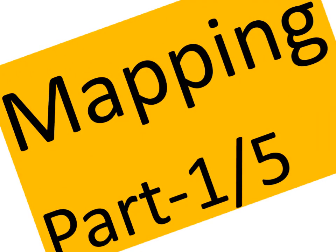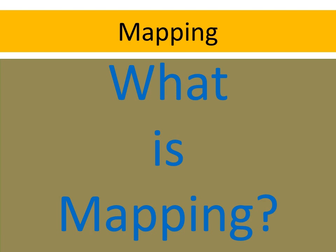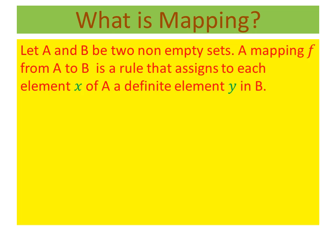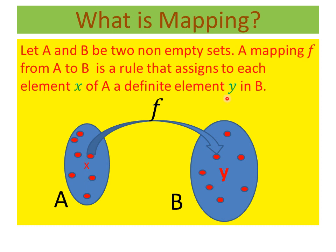Now I will discuss mapping. I have shared five videos on this topic; this is Part 1. Please see the other videos — the links are in the description box. First, I give the definition of mapping. Let A and B be two non-empty sets. A mapping f from A to B is a rule that assigns to each element X of A a definite element Y in B.